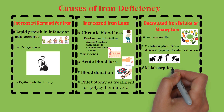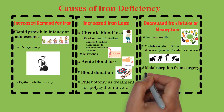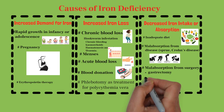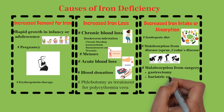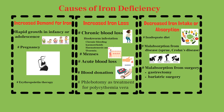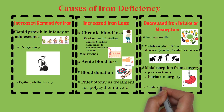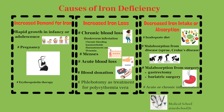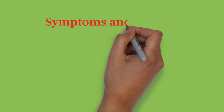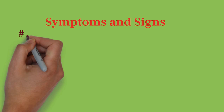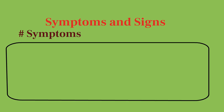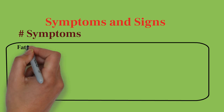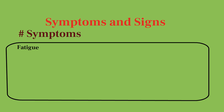Before we proceed to symptoms and signs, one should know that the diagnosis of iron deficiency anemia is totally based on clinical presentation — if you examine the patient carefully, you can know at first instance that the patient has iron deficiency anemia. Now we are going to talk about symptoms and signs. Majority of patients come with a complaint of easy fatigability. The reason is that in iron deficiency anemia, decreased oxygen supply to muscles and myoglobin leads to easy fatigability and eventually body ache.